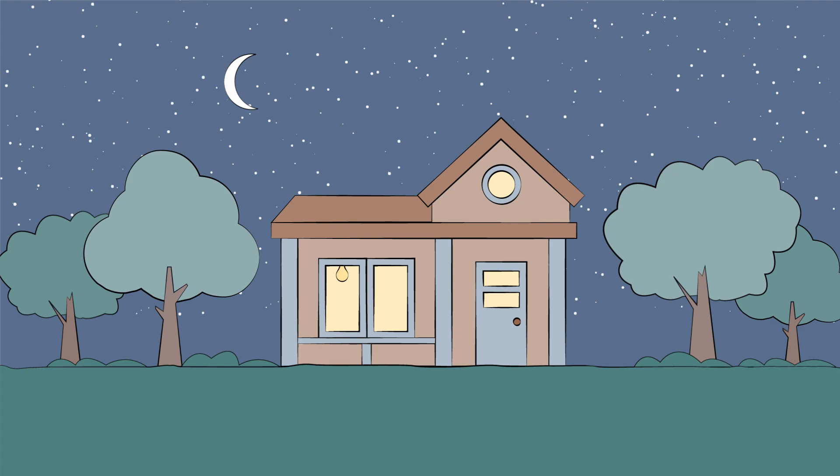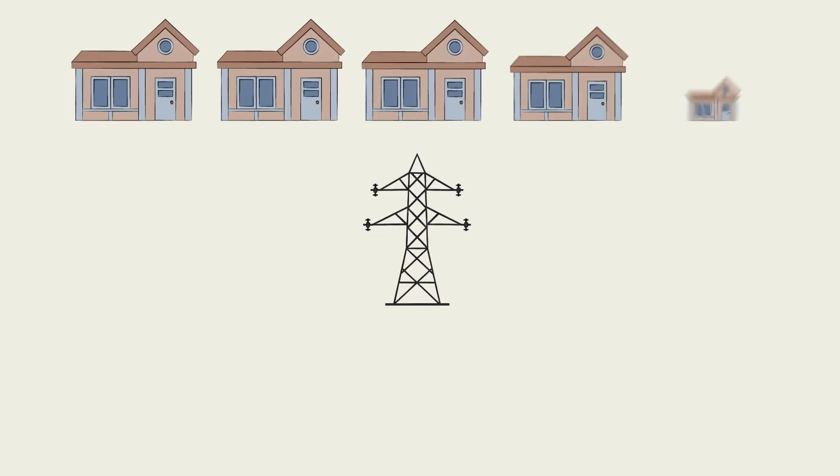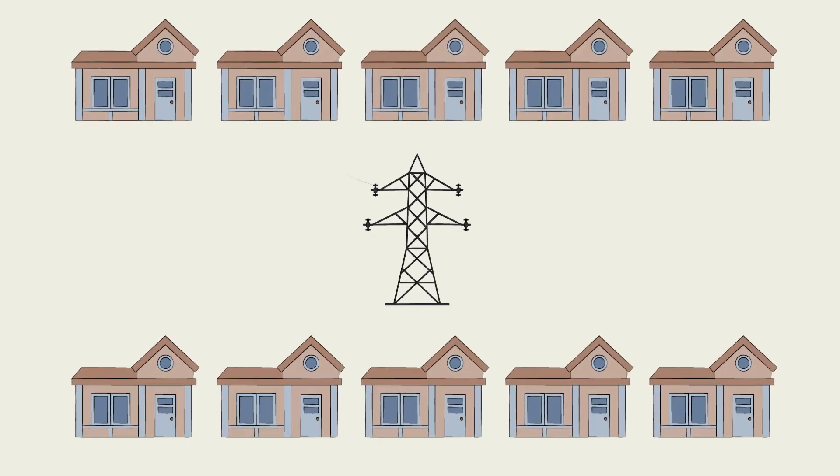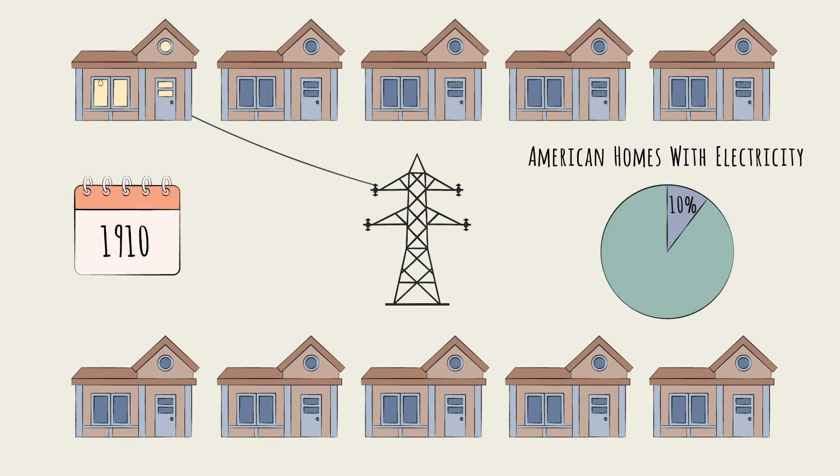Soon, thanks to power companies like General Electric, electricity for light bulbs was piped directly into homes. By 1910, 10% of Americans had electricity. By 1930, that number was nearly 75%.